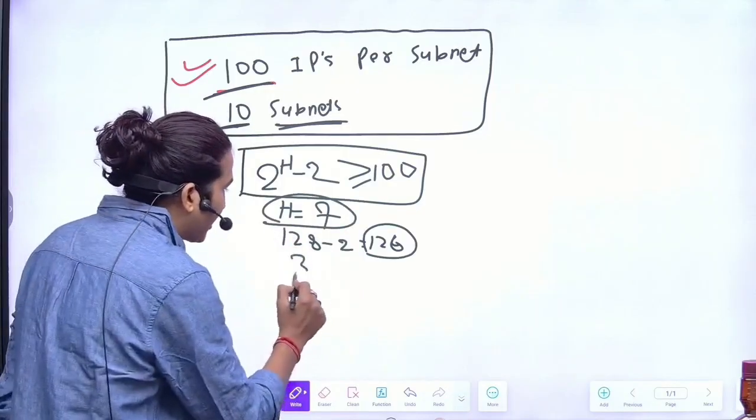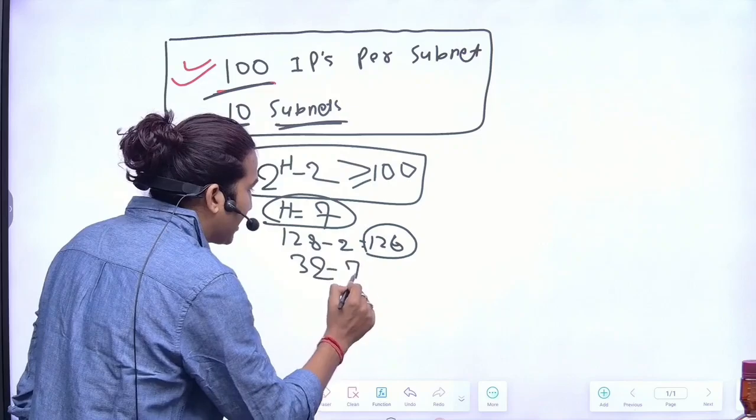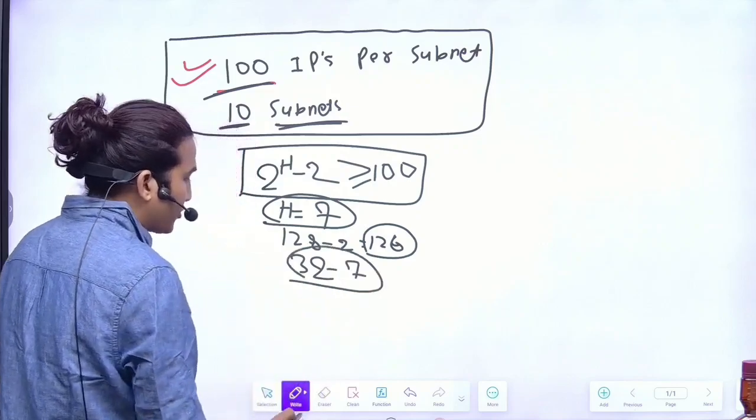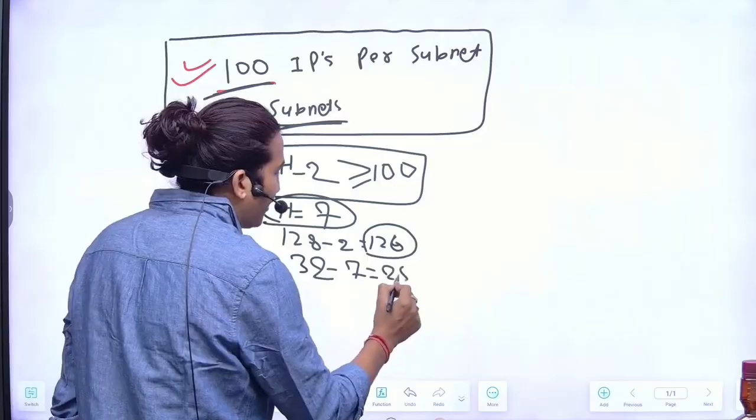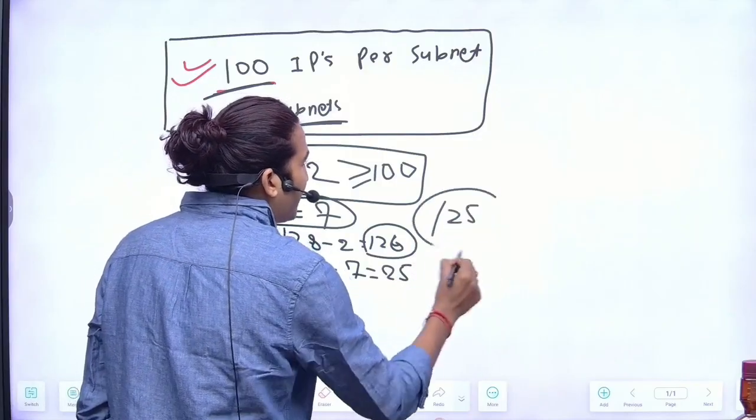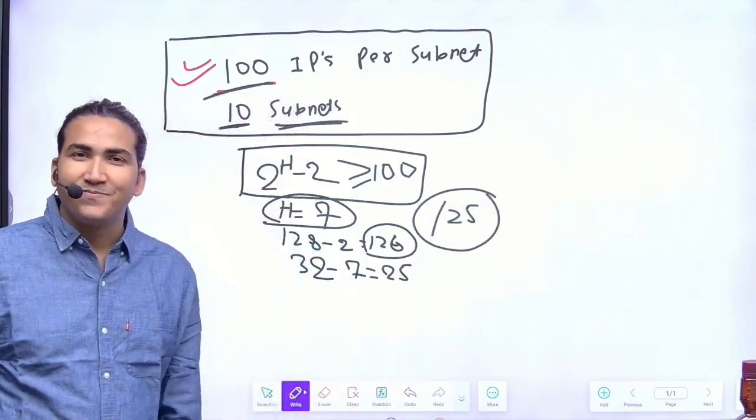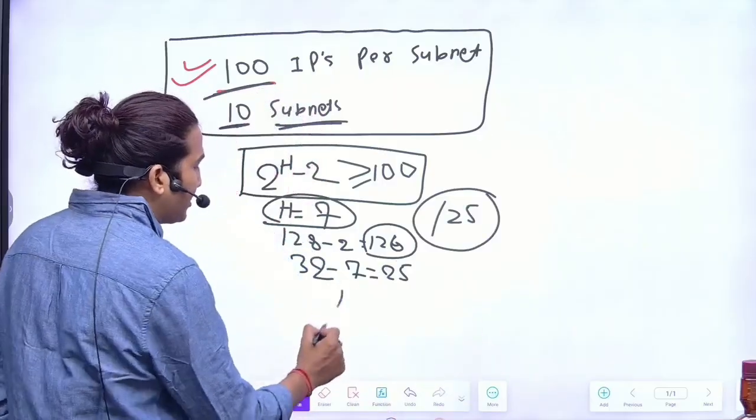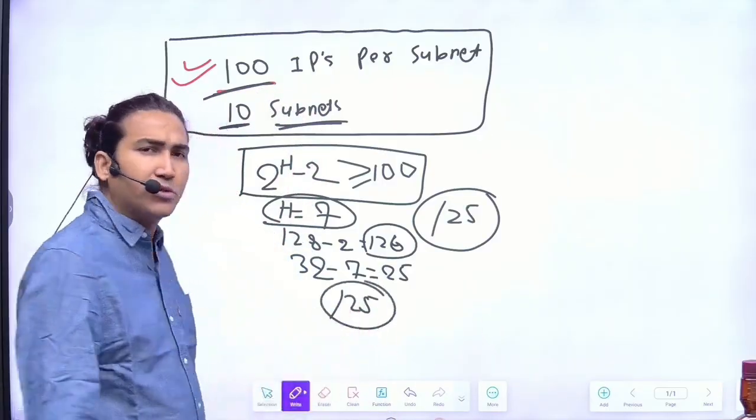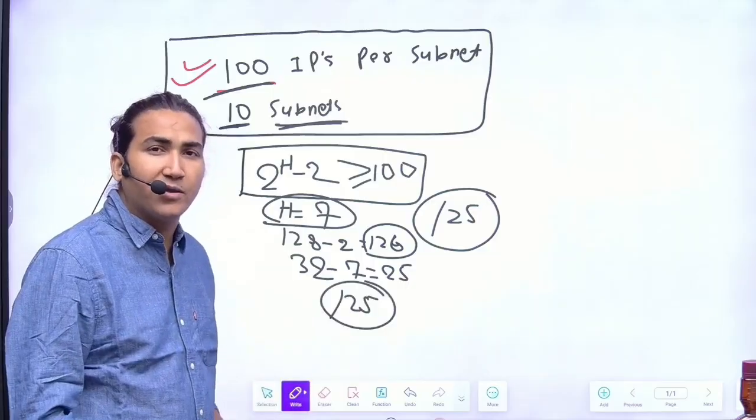So host bit is 7. In total 32 bits IP address, 7 bits are host bits. So what will be the network bits? Network bits is going to be 25. So CIDR value should be 25. That is clear. One thing is clear that CIDR value is 25. You can say CIDR value should be 25 only. It will be 25.